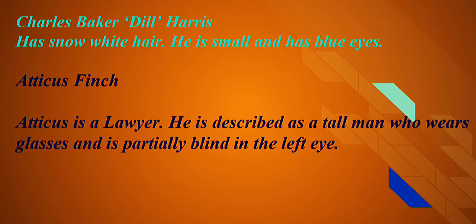Dill mentions that he had seen his father. We can find that in chapter 4, where Scout describes Dill's father based on what Dill told them — that his father was taller than their father, had a black pointed beard, and was also the president of the L and N railroad. We know this is all a lie, because Dill doesn't know his father. He's only admitting to this because he feels embarrassed and left out by the fact that he does not know his biological father.